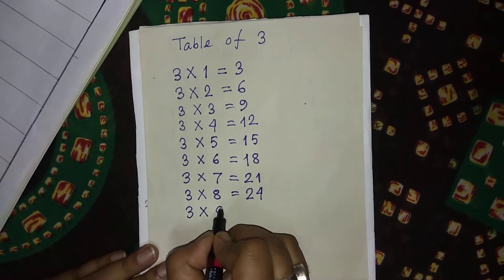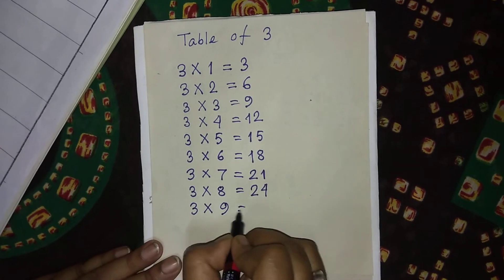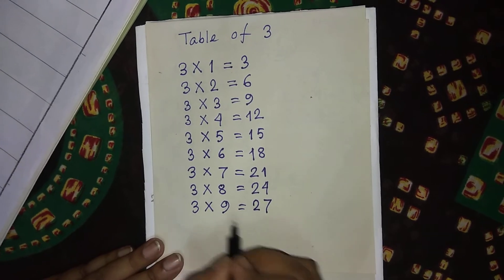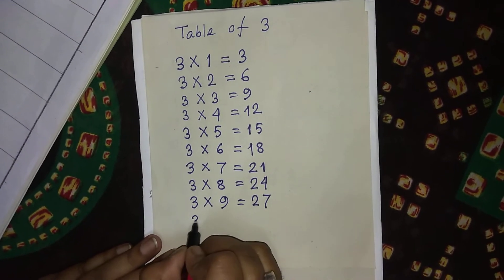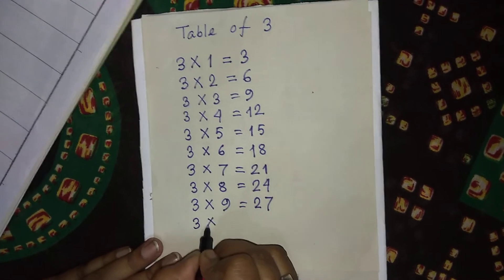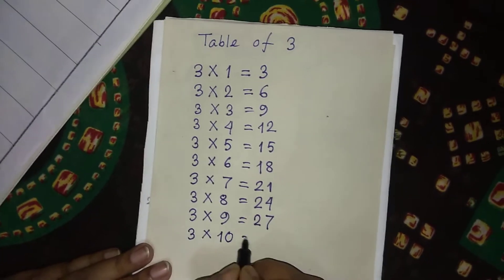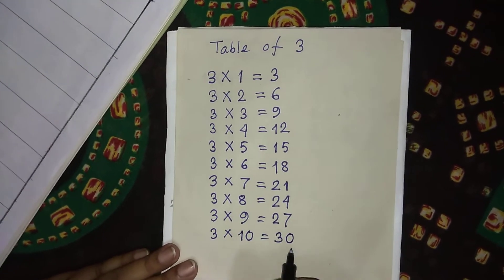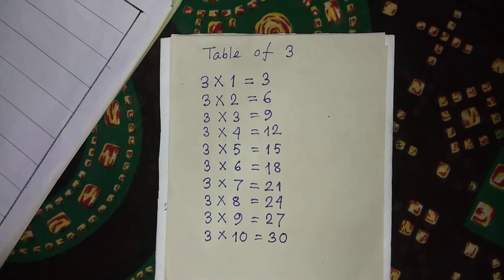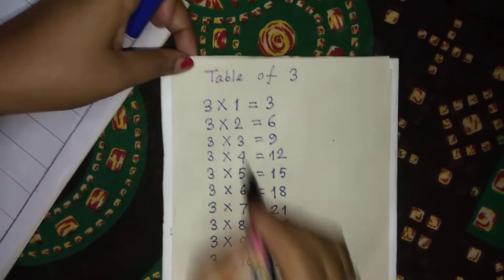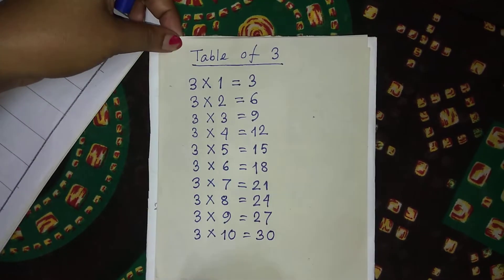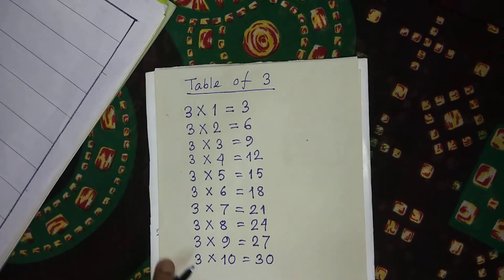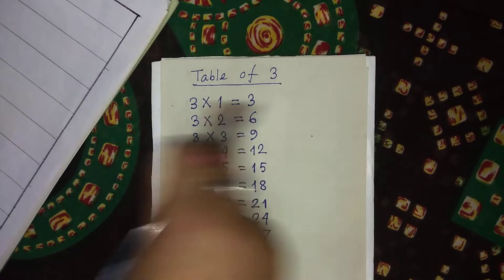Three multiply by nine is equal to twenty-seven — three nines are twenty-seven. Three multiply by ten is equal to thirty — three tens are thirty. That is the writing process. When you write the table, you will write in this way.